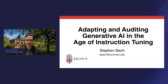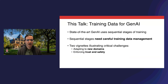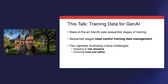I'm excited to be here to talk about adapting and auditing generative AI in the age of instruction tuning. I'm Stephen Bach, an assistant professor of computer science at Brown, and this is work done by our group there. I'm going to talk about the training data we use for generative AI like large language models. The key shift in the last couple of years powering all the amazing advances in large language models is multiple sequential stages of training. Large language models need sequential stages of training, and my message today is that those stages need careful training data management.